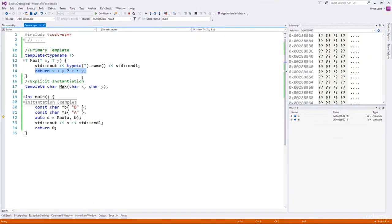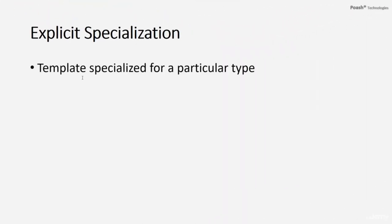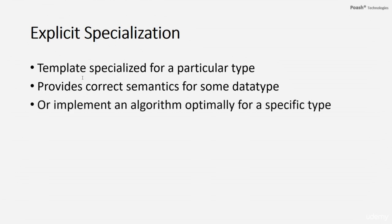We can use explicit specialization to solve this. In explicit specialization, we specialize a function or class template for a particular type — because the algorithm we implemented may not suit a specific data type or does not provide correct semantics for it. Another reason is that we may be able to implement the algorithm more optimally for a specific type. Therefore, we can write a new definition for that specific data type using explicit specialization.